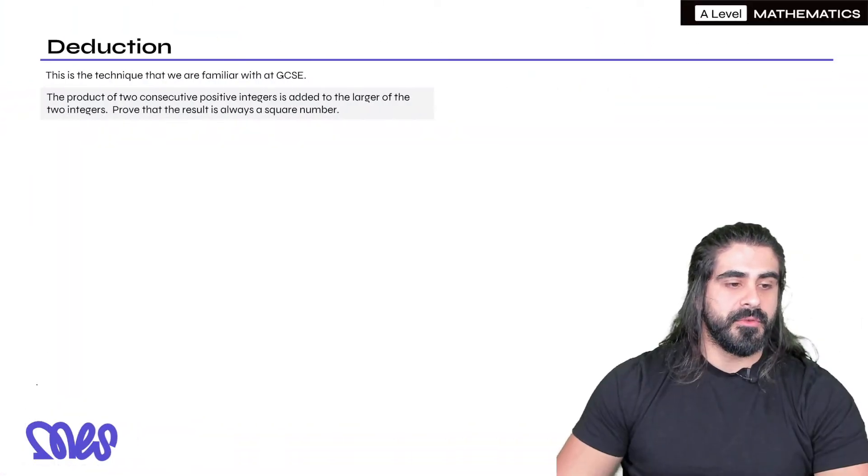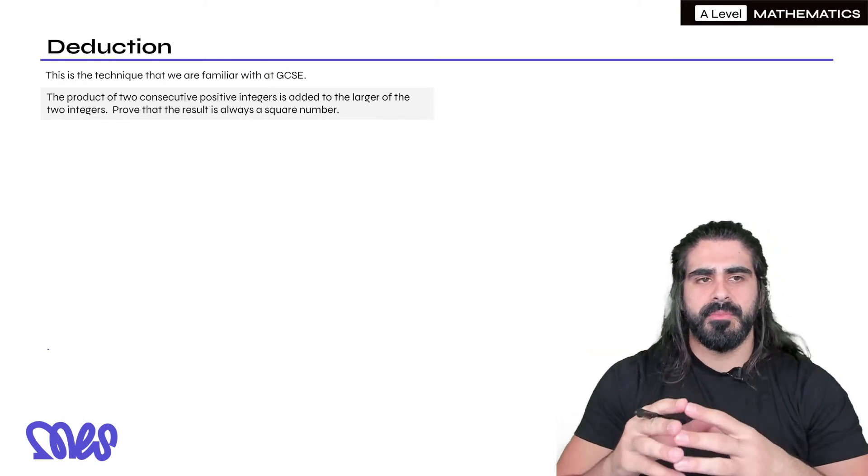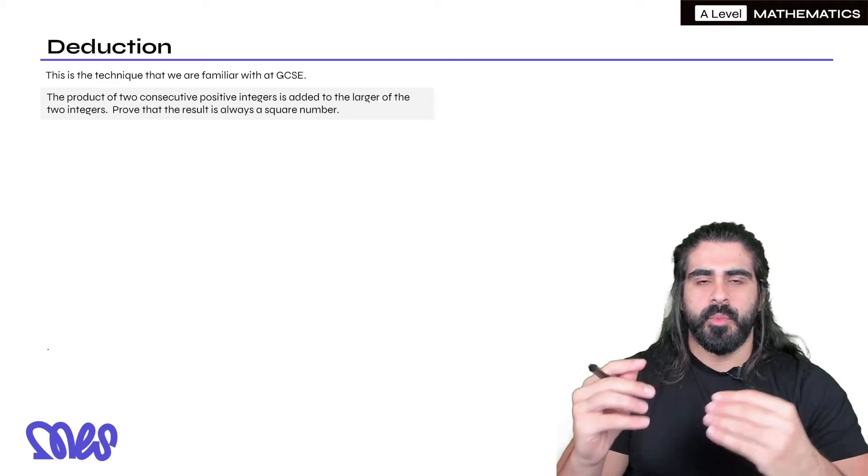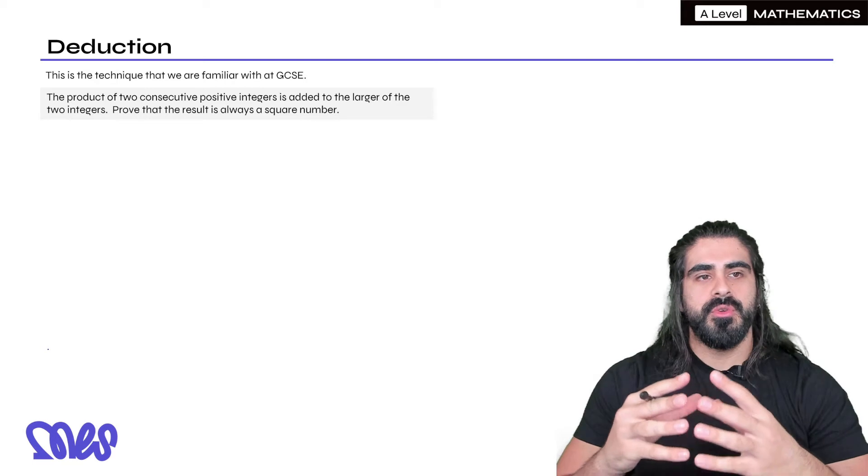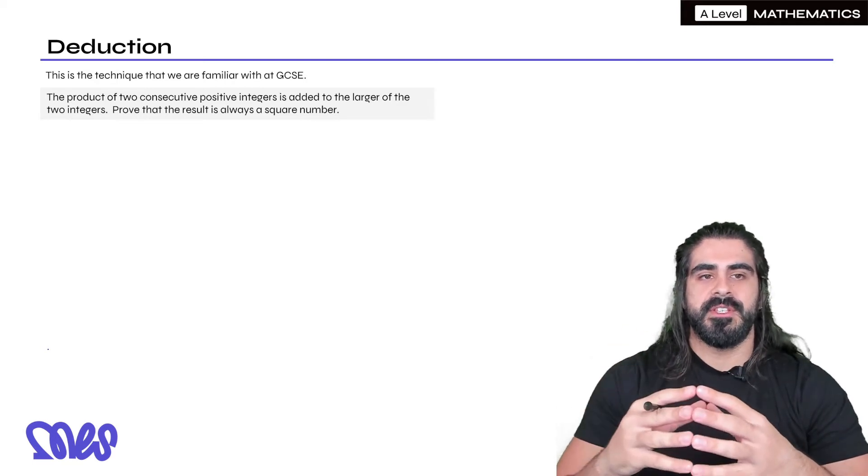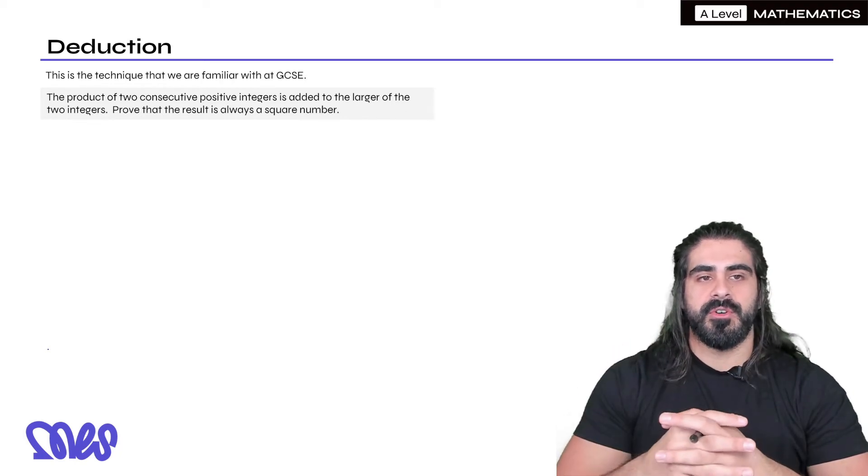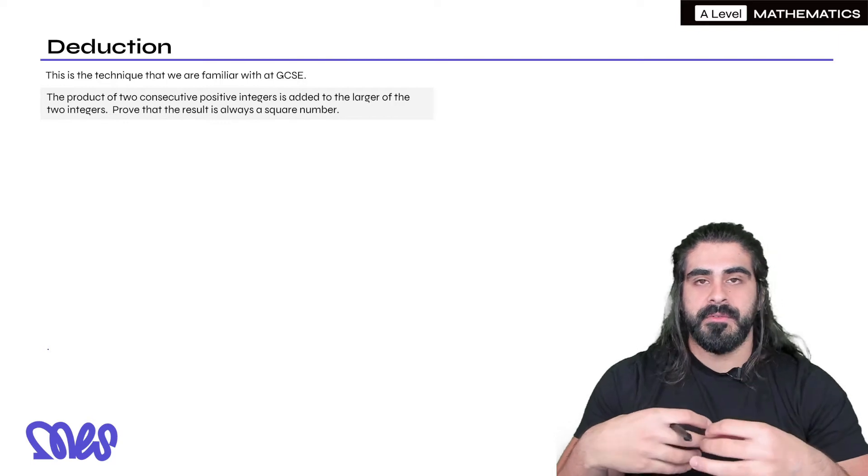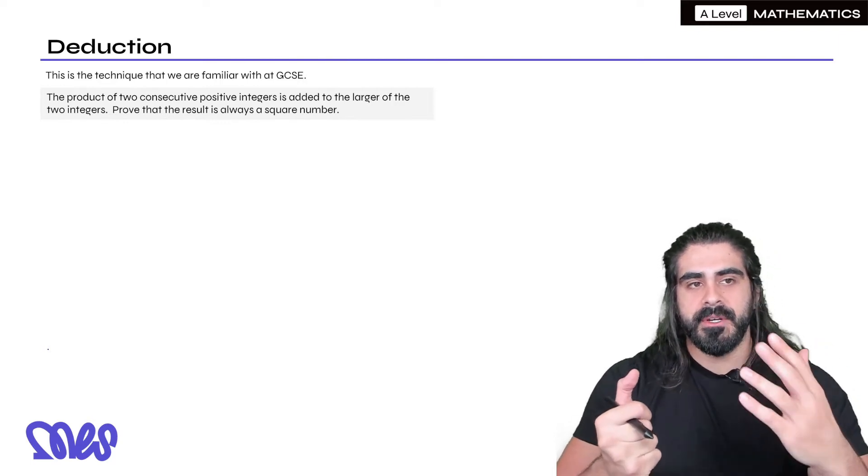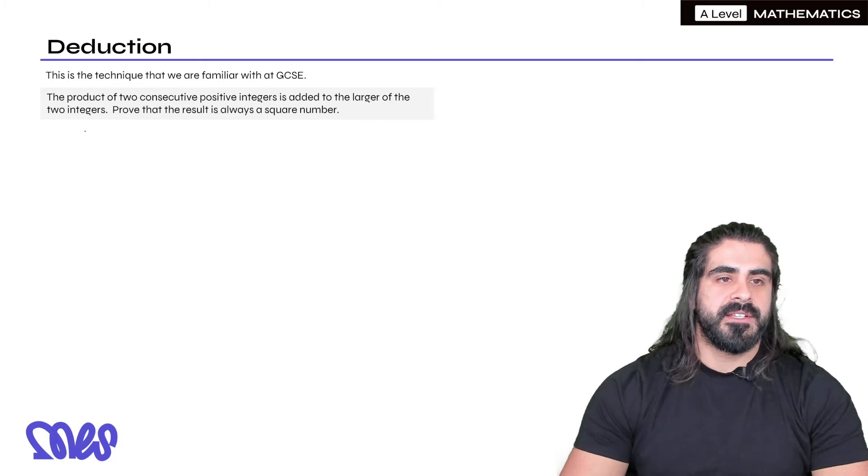Now, the next type of proof here is deduction. Now, this is the technique that we're familiar with GCSE. I'm going to show you two examples. One slightly easier one and one really tricky one. So the product of two consecutive positive integers is added to the larger of the two integers. Prove that the result is always a square number. So deduction is about letting a number be n or if it's an even number, 2n, an odd number, 2n plus 1, etc.